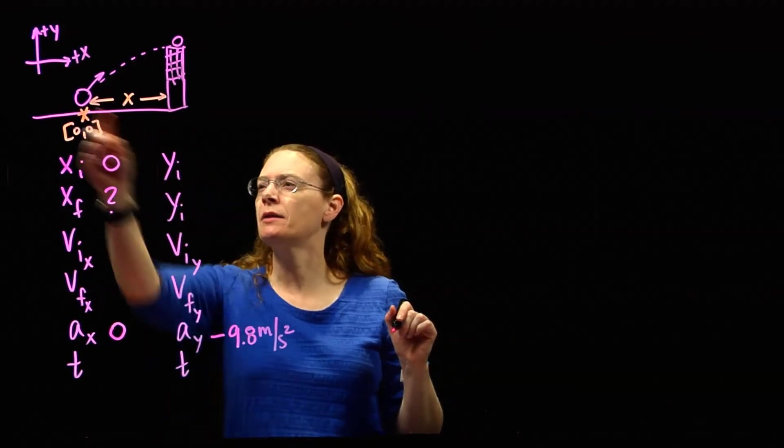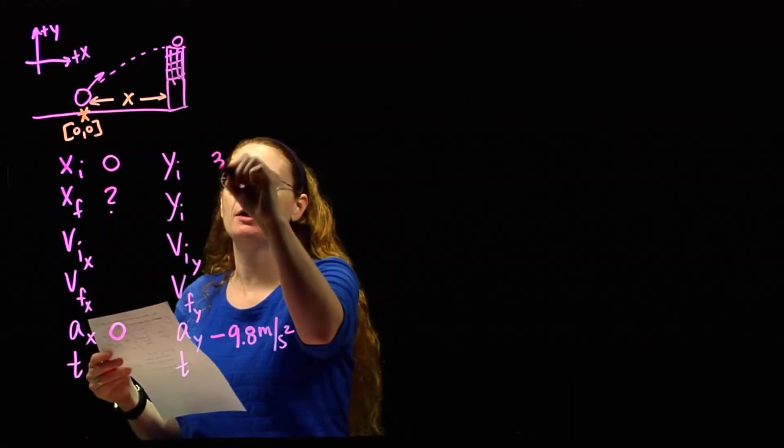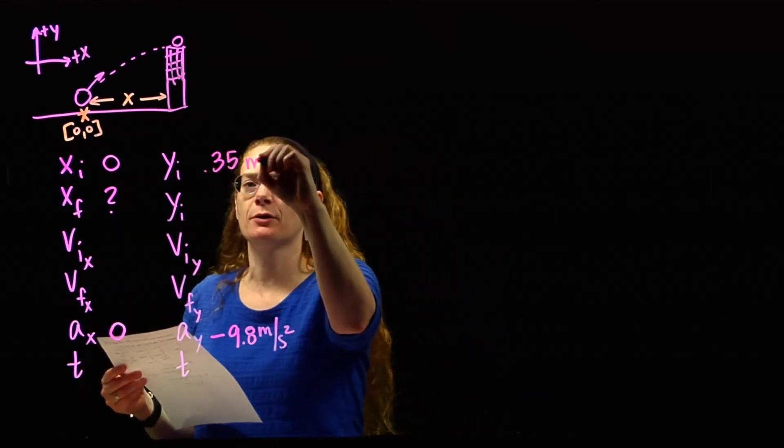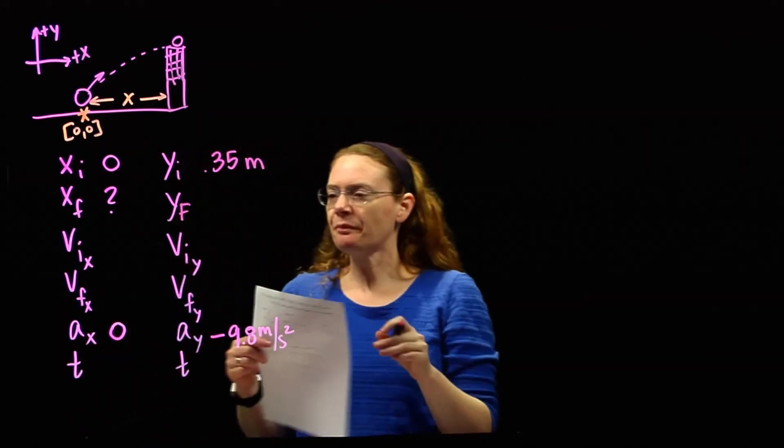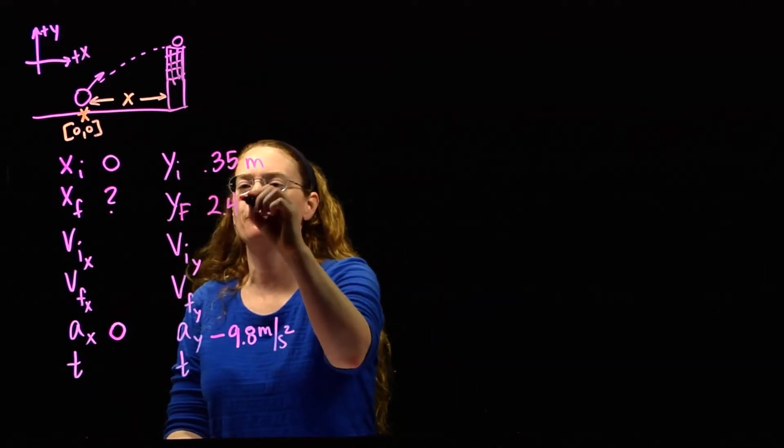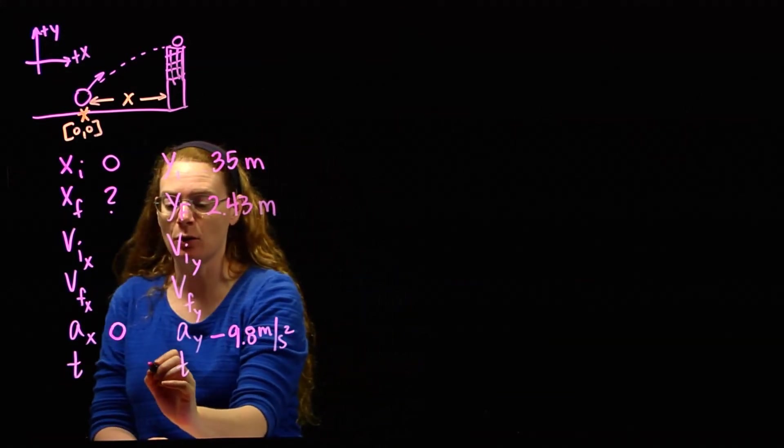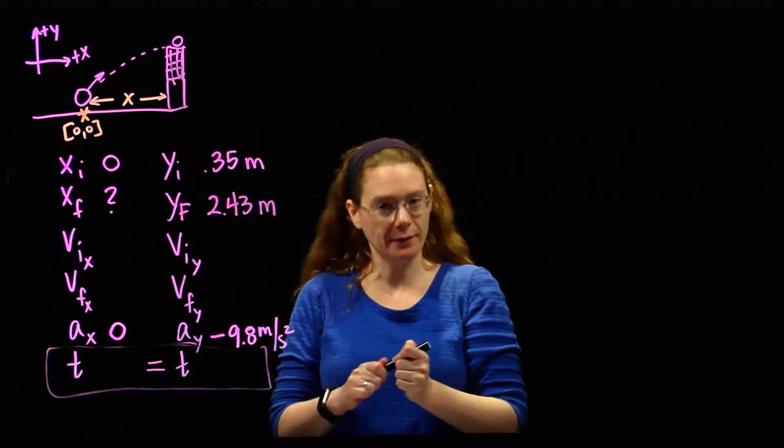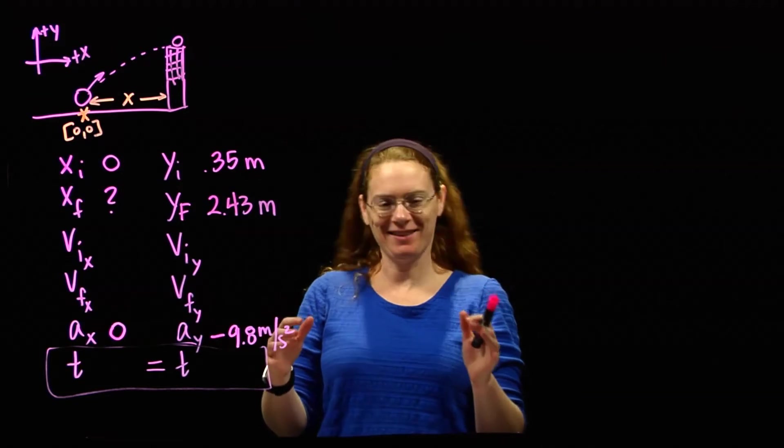Do we know its initial height? Yes. We were told it was 35 centimeters above the floor. Now be careful with that. That's centimeters. We need to convert to meters. So 0.35 meters above the floor. Its ending height was the height of the net, 2.43 meters above the floor. Don't know viy, vfy, or time. The time is the only thing that's the same for projectile motion. That's the only thing that transfers between horizontal and vertical, because the ball's in motion for the same time horizontally as it is vertically.